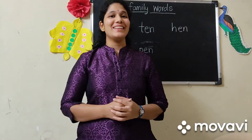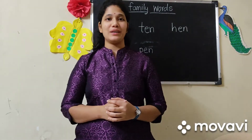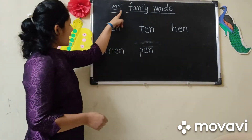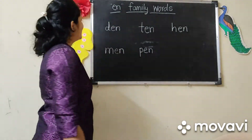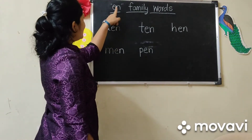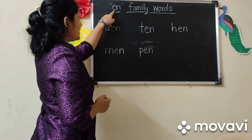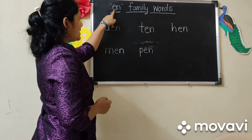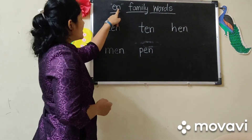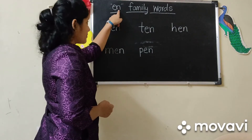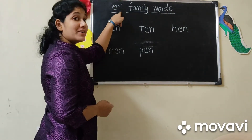Hello everyone. Good morning all. Today we are going to learn E-N family words. Okay? So children, E and N. What is the sound of letter E? E says 'E' and N says 'N'. So it makes sound E-N.